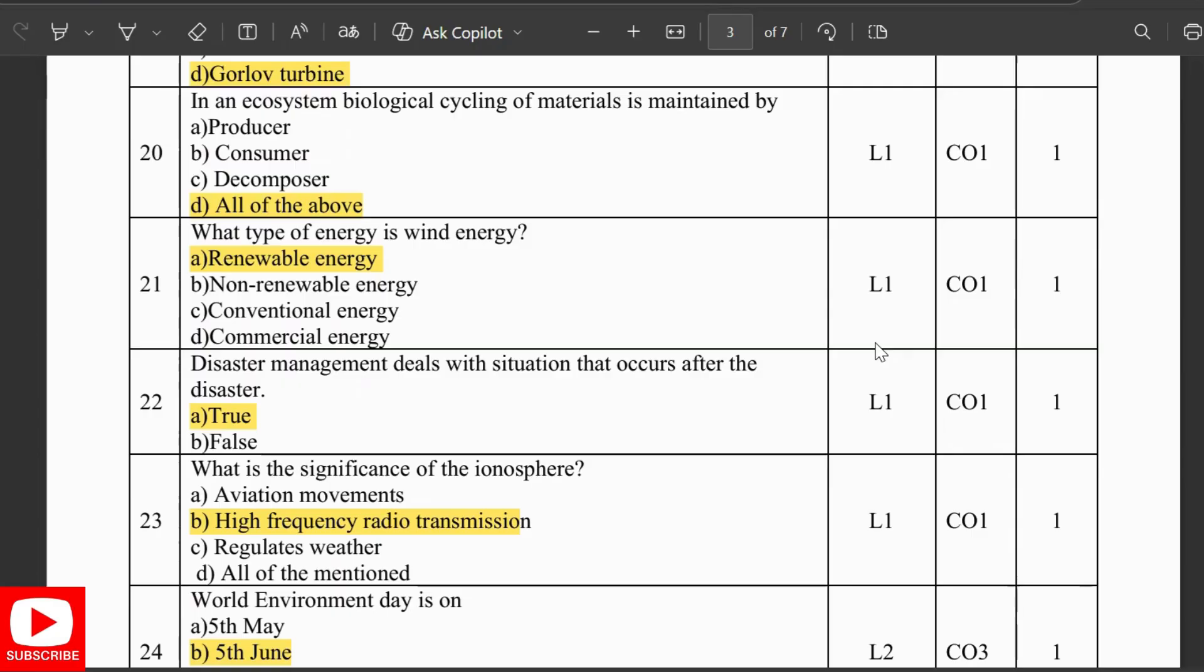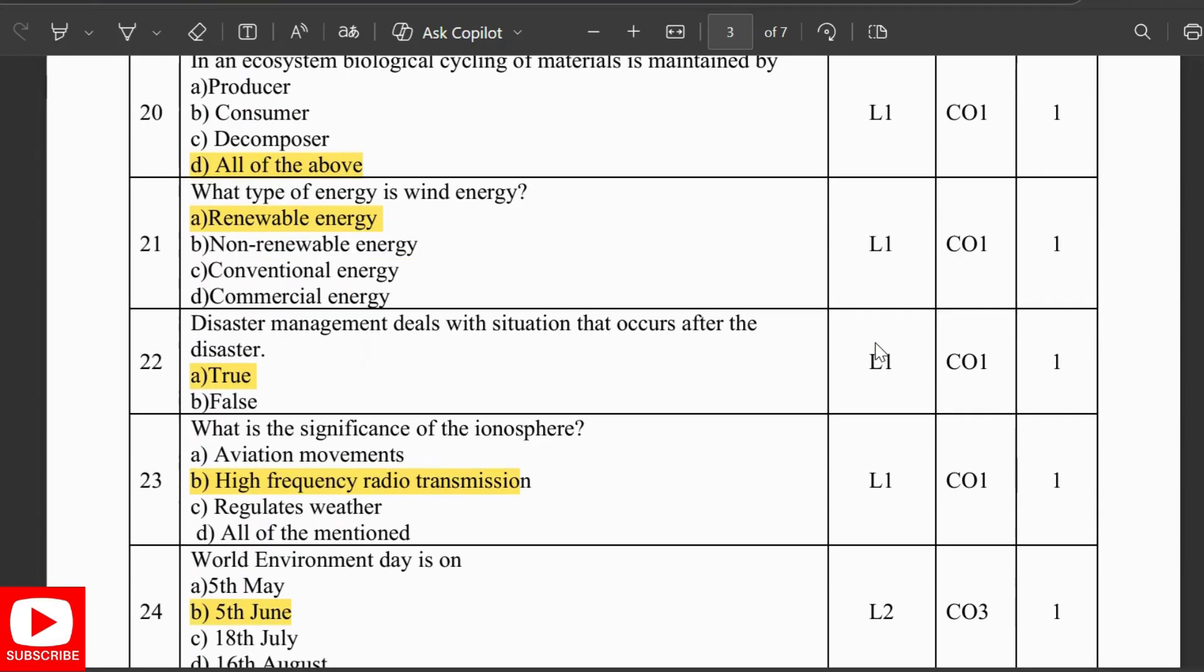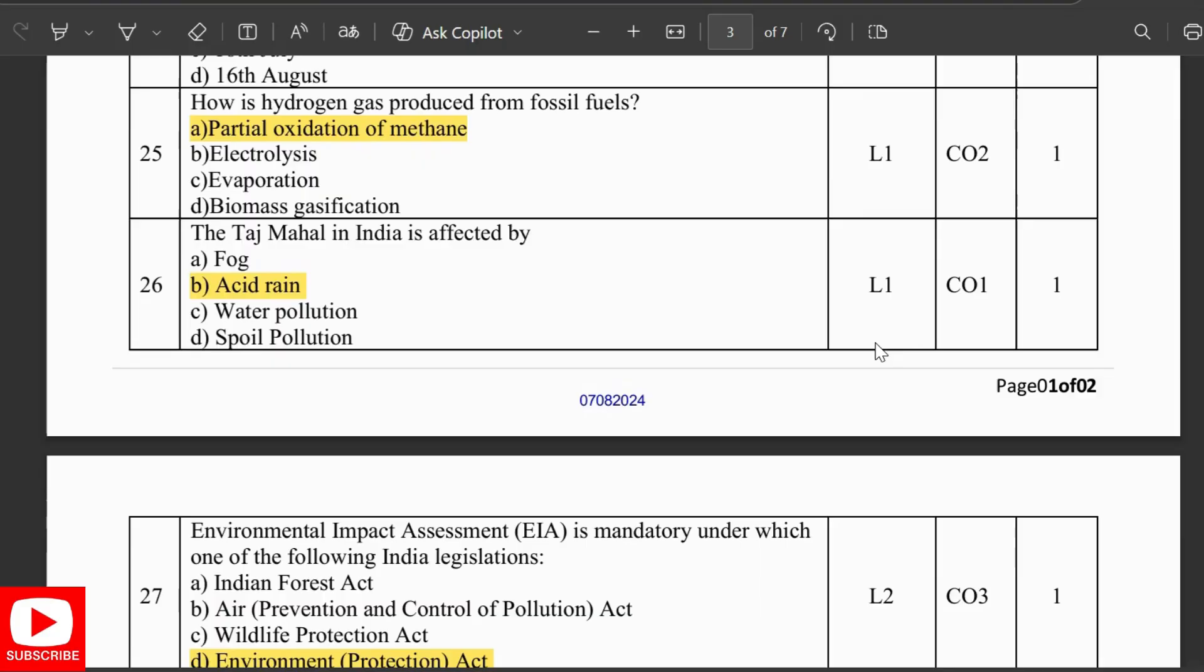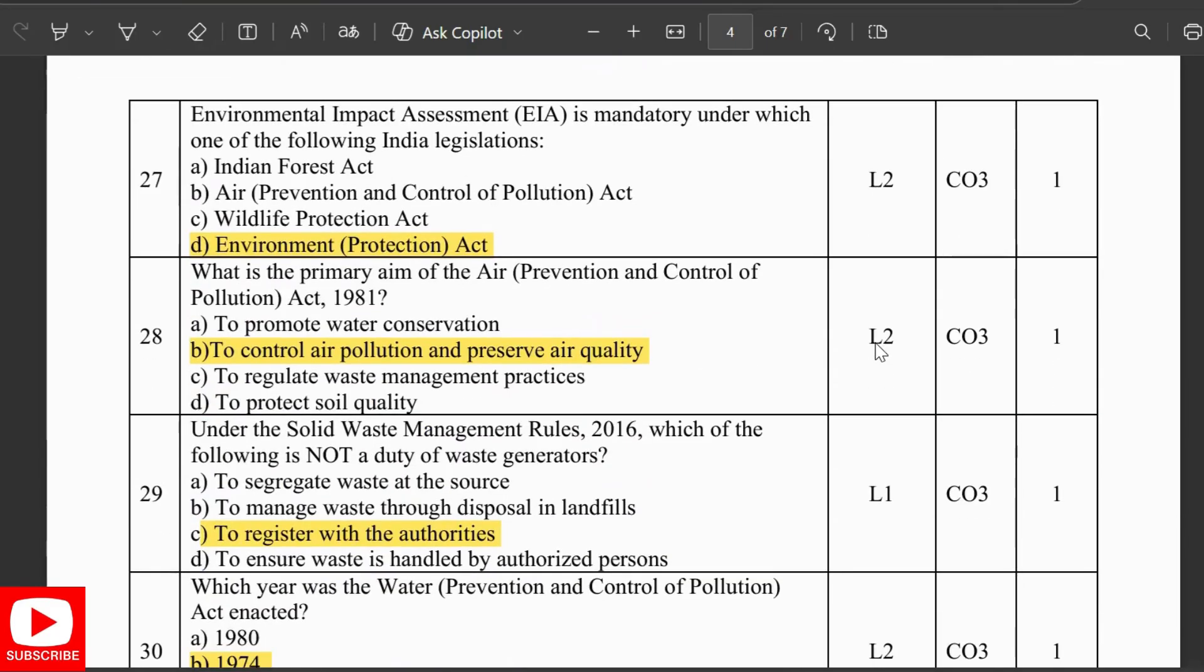Disaster management deals with the situation that occurs after the disaster too. What is the significance of ionosphere? High frequency radio transmission. The World Environment Day is on 5th June. How is hydrogen gas produced from fossil fuels? From the partial oxidation of methane. The Taj Mahal in India is affected by acid rain.